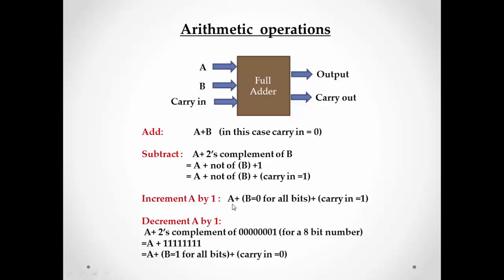To increment A by one, we add one to A. So we make input B zero and set carry-in to one, then add A with carry-in. In the case of decrement A by one, the two's complement of one for an eight-bit number means all bits are set. So we make all bits of input B equal to one and carry-in equal to zero. Adding A with this gives A minus one.